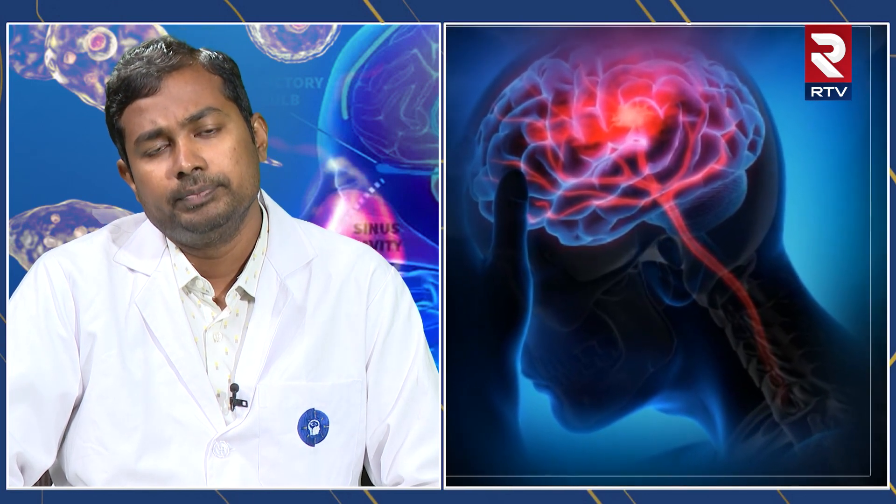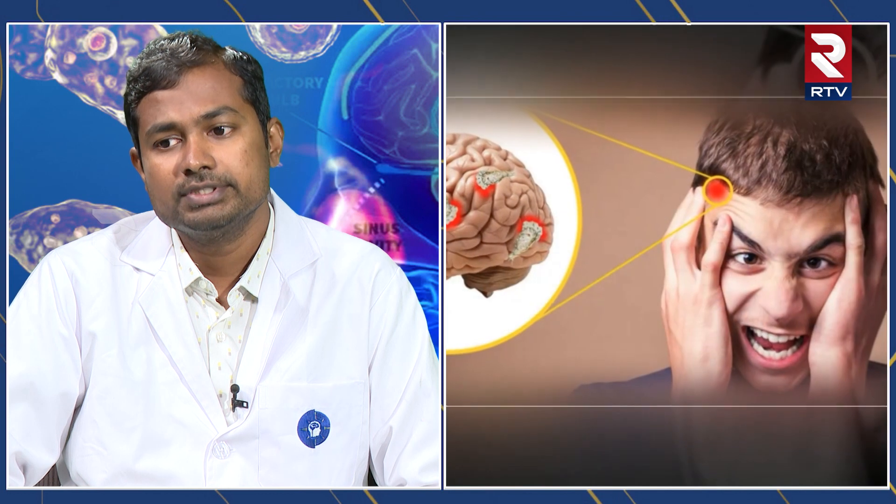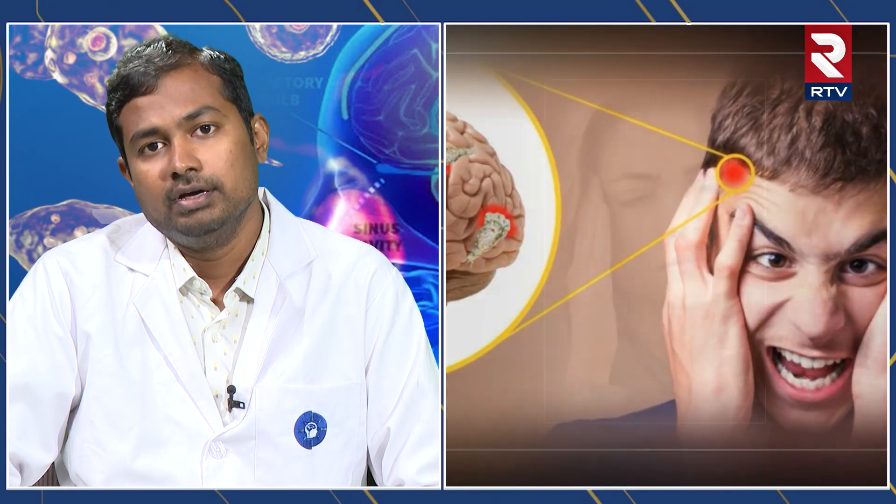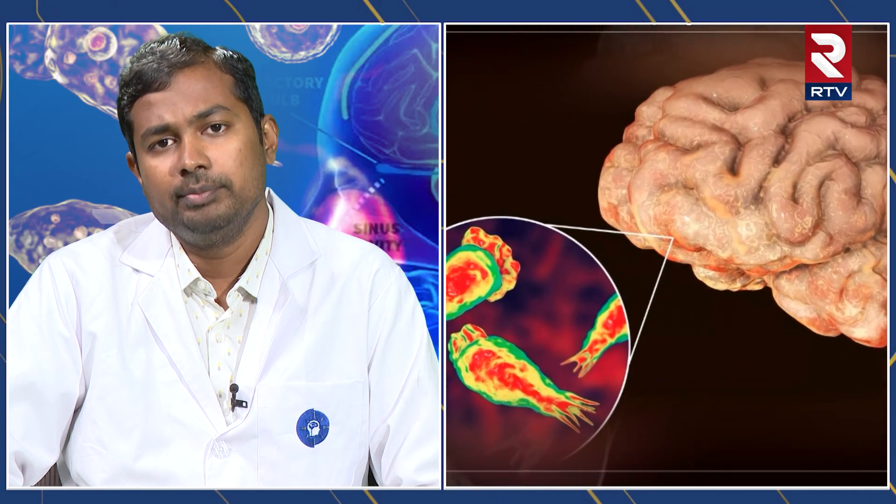Miltefosine is another medicine which is not regularly available everywhere. Now Kerala is able to import and use it from other countries. In our settings, for every kind of such infection, the first line is Amphotericin B and Rifampicin combined.